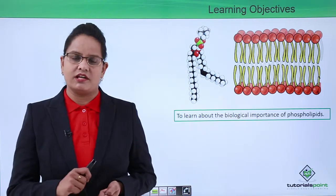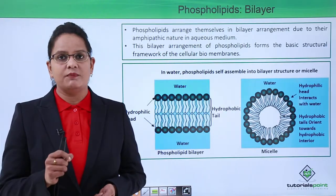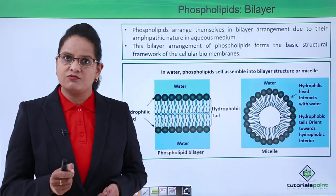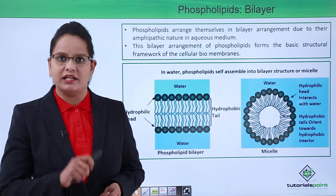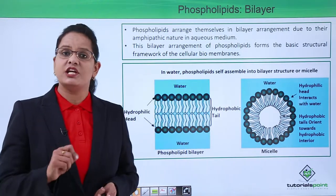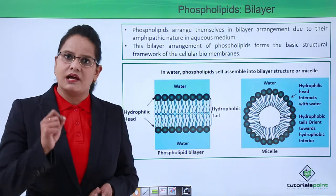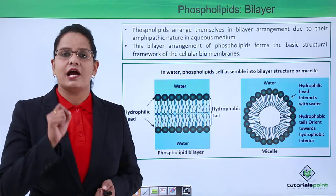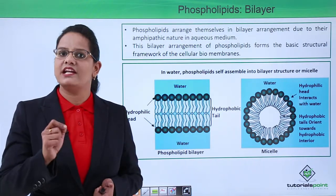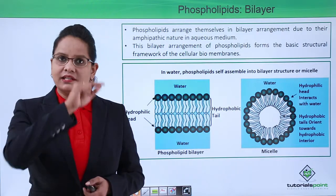Phospholipids form a lipid bilayer. This bilayer is formed because of the amphipathic nature of phospholipids — they arrange themselves in a bilayer arrangement because there is a hydrophilic head and a hydrophobic tail. The tail is made up of fatty acids and the head is made up of a phosphate group and a nitrogenous base.